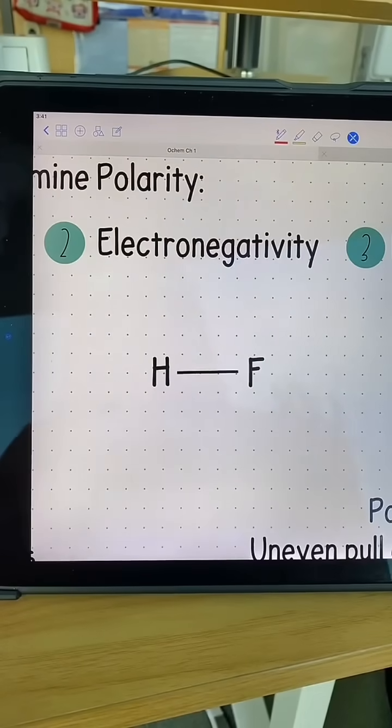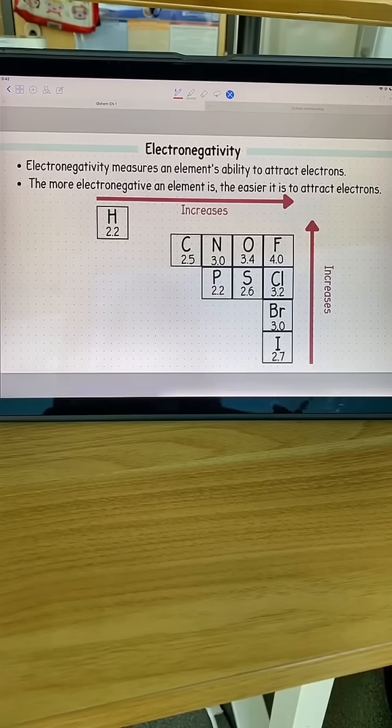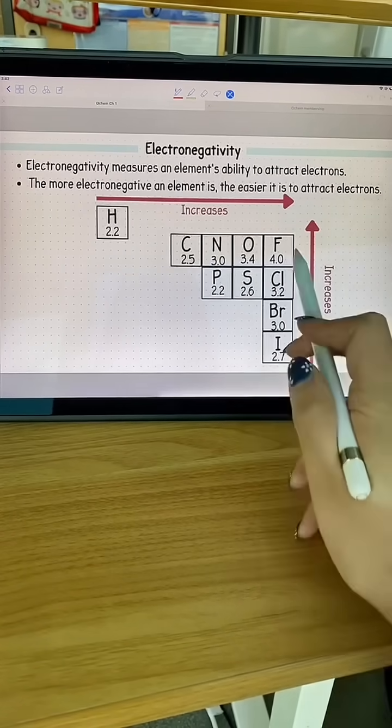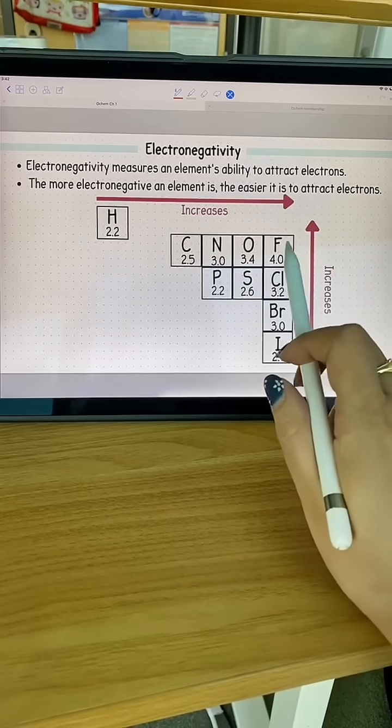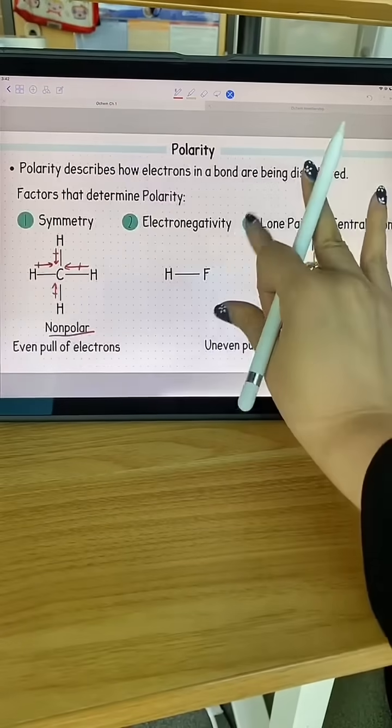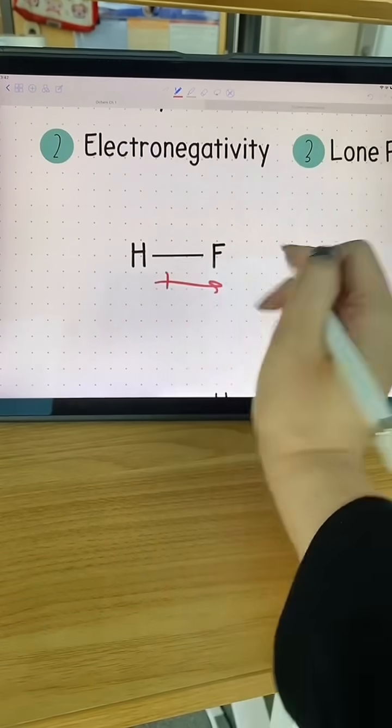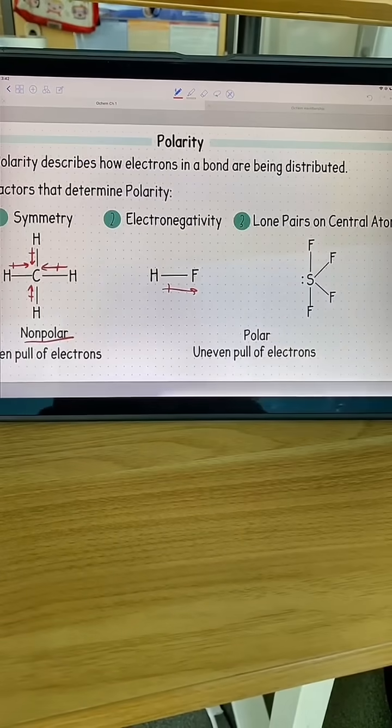The next factor is electronegativity, which measures an element's ability to attract electrons. Recall this is our overall trend for electronegativity. I know that fluorine in this case is going to be the most electronegative atom. Going back to my example, I know that there's an uneven pull of electrons here, so it makes it polar.